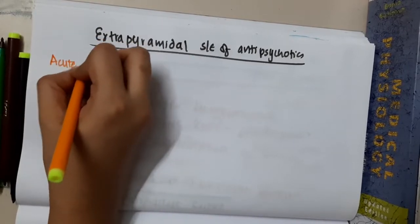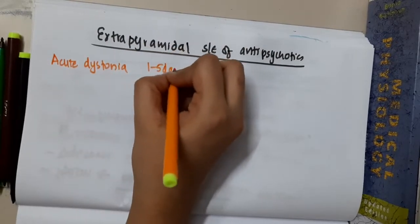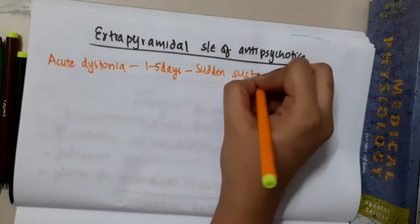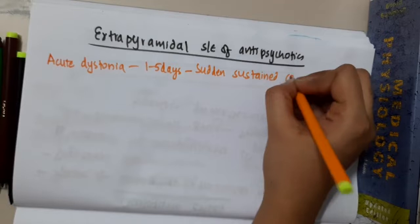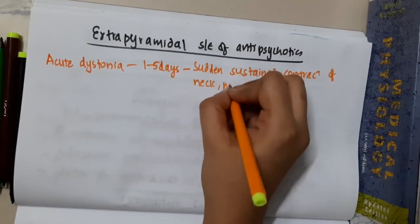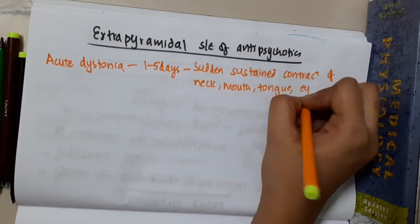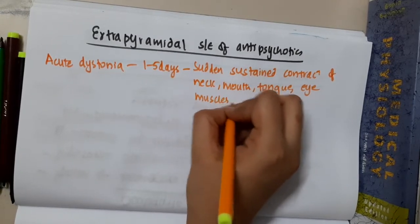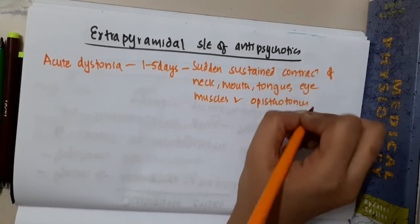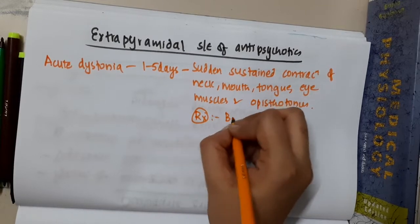The first is acute dystonia. Acute dystonia occurs within one to five days and causes sudden sustained contraction of the neck, mouth, tongue, and eye muscles, as well as opistotonous.